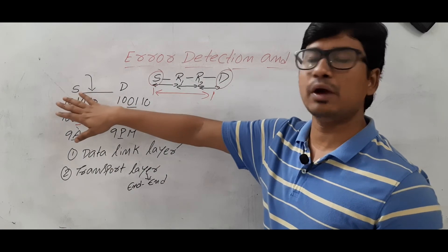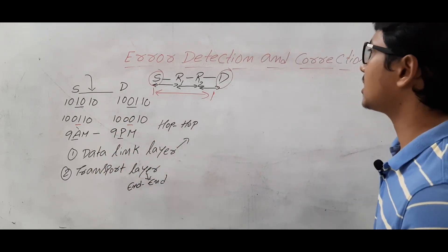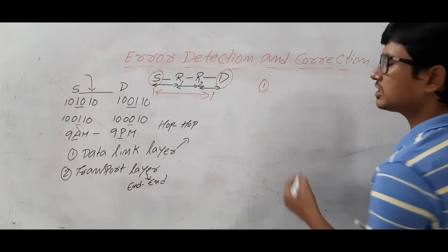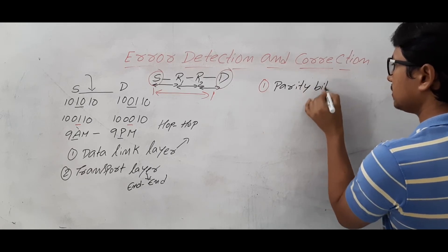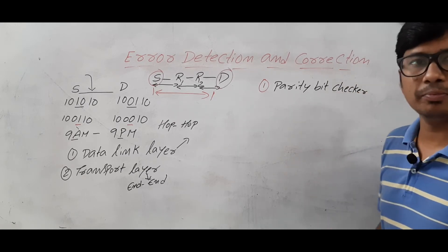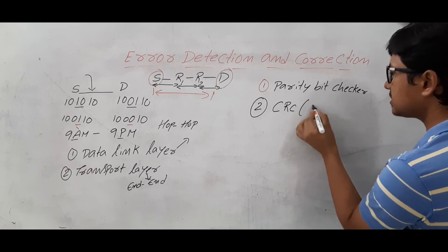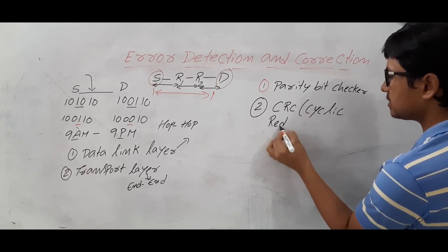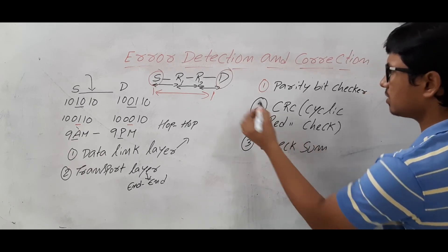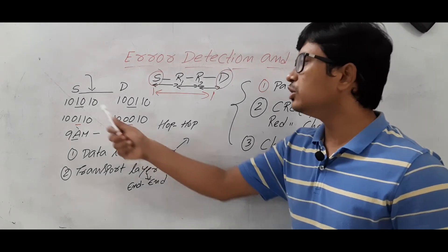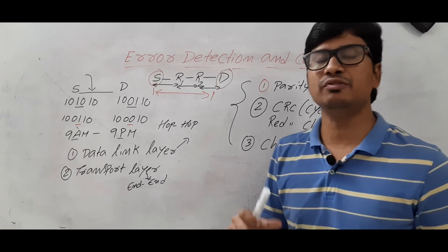Now let me discuss error detection strategies. We have parity bit checking — including even parity and odd parity. We also have CRC, which is Cyclic Redundancy Check, and we have checksum. All these are error detection methods, because if you want to correct an error you should first detect it. Parity bit checking, CRC, and checksum are all useful for identifying or detecting whether there is an error.